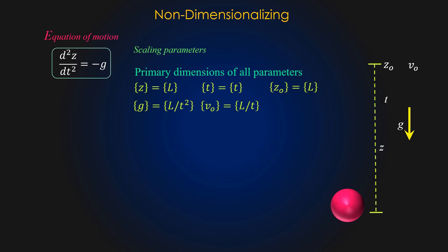For the three dimensional constants g, z0 and v0, let's consider z0 and v0 as the scaling parameters. Now using our two scaling parameters, non-dimensionalize z and t into non-dimensional variables z star and t star.